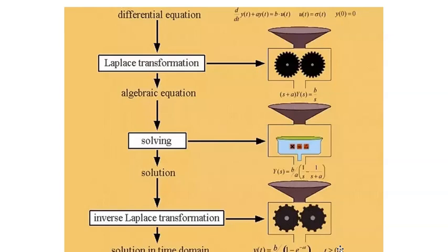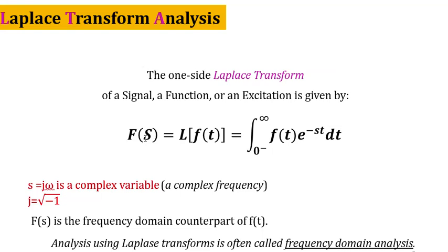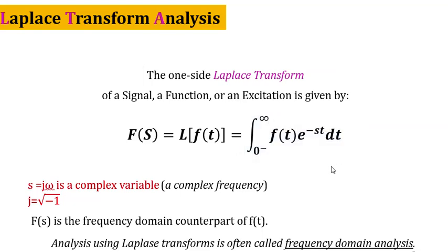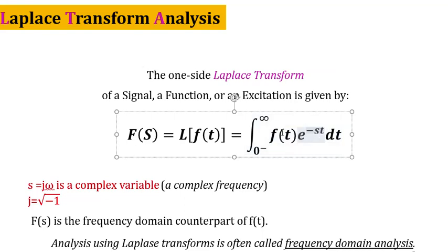You go from the time domain to the Laplace domain with this equation: F(s) equals the integral from zero to infinity of f(t) times e to the power of minus st, dt. Since it's a bounded integral, t will be eliminated in the answer and s will remain. So something that had t — like f(t), your signal in the time domain — will end up giving you an answer which has s, taking you to the s-domain.